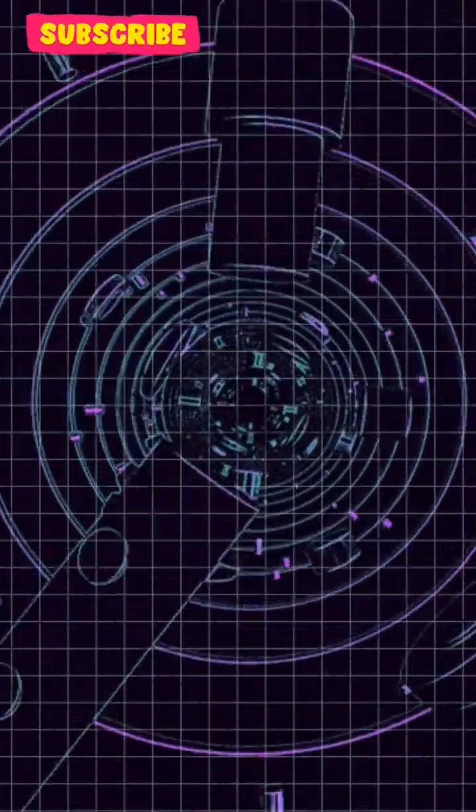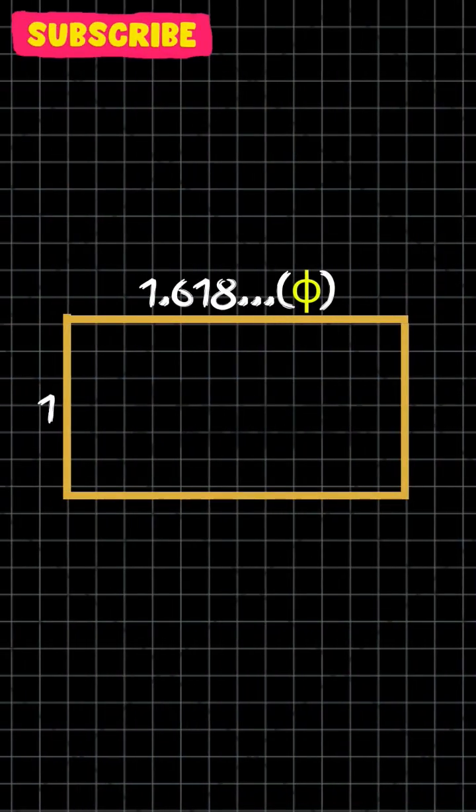One of the most well-known manifestations of the golden ratio is the golden rectangle. A golden rectangle is a rectangle whose side lengths are in the golden ratio, as to b is equal to phi.